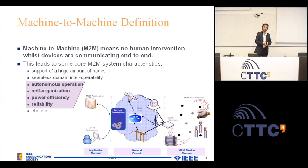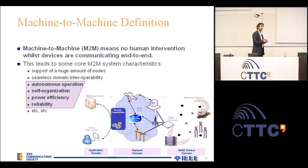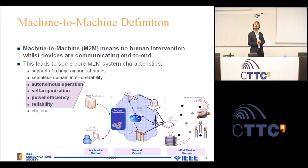I will introduce to you the concept of machine to machine — what it is all about. It is really about a system where machines communicate with other machines without any human intervention. That means you would like to deploy a large amount of sensors or actuators sensing or actuating in the field, reporting the data to a control center without any human being in the loop. A lot of machines will be deployed in the field and human intervention would just be too costly.